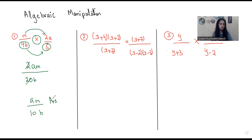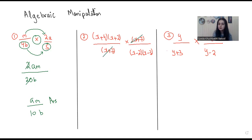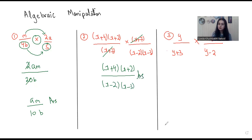In the second question, again we have multiplication, but this time the fractions are not simple: (x+4)(x+2) over (x+7) multiplied by (x+7) over (x−2)(x−3). I can cancel out the two (x+7) terms, and I am left with (x+4)(x+2) divided by (x−2)(x−3). This is going to be the answer — I am not supposed to expand or further simplify it.